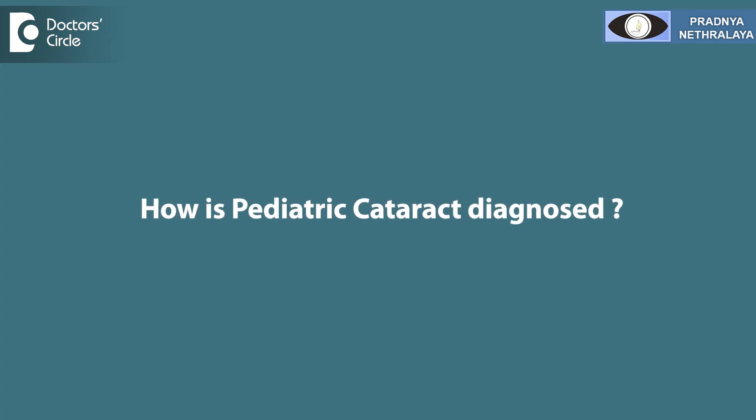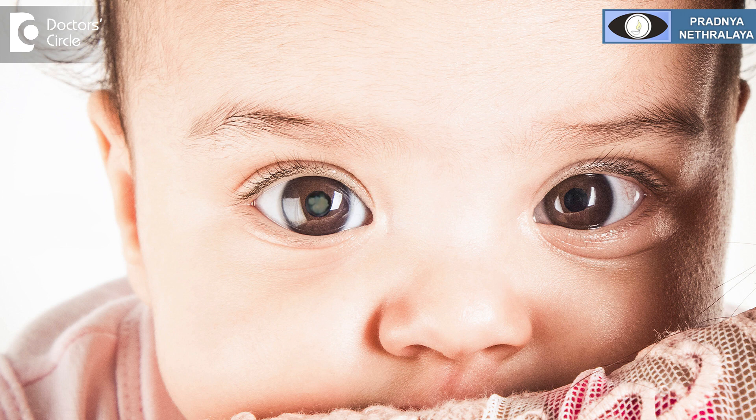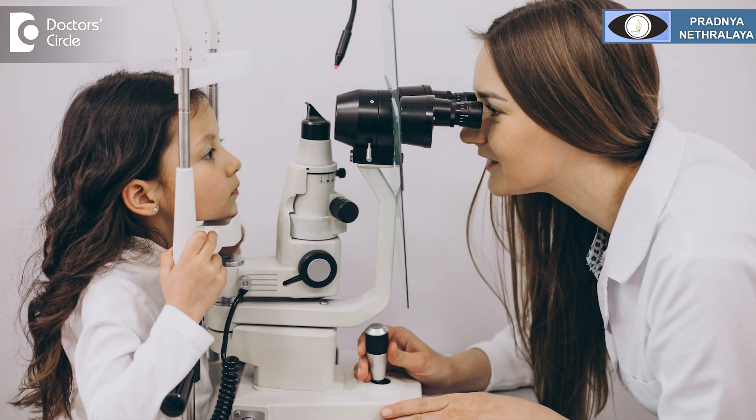How is pediatric cataract diagnosed? Usually, a pediatrician is the first person to diagnose a pediatric cataract. They may see a white reflex in the center of the eye. Or parents can also recognize this — the child is not looking through one eye. These are the symptoms one has to pick up to diagnose a cataract. Further diagnosis is made by an ophthalmologist.